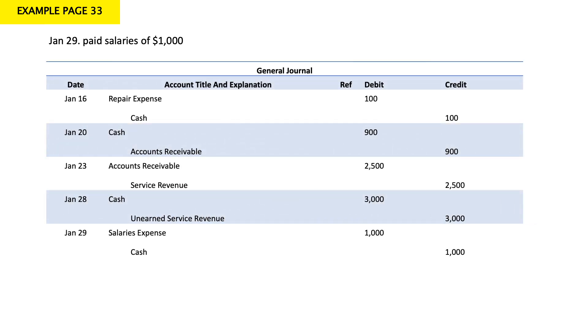January 29: paid salaries of $1,000. When we pay salary, this is an expense. My cash decreased by $1,000 and my expenses increased by $1,000. Expenses are debit accounts — they increase in debit and decrease in credit. Cash is an asset that decreases in credit. So: debit salaries expense for $1,000 and credit cash by $1,000.